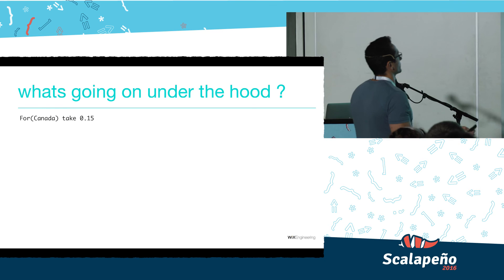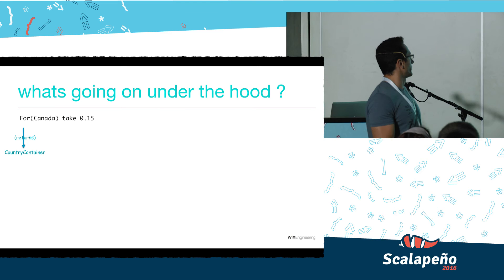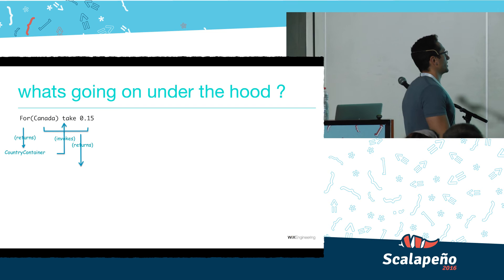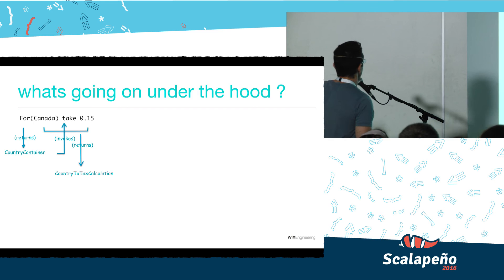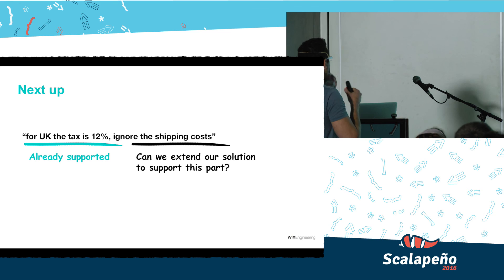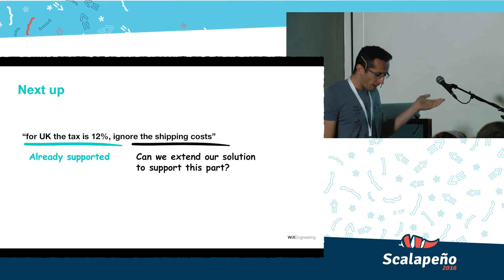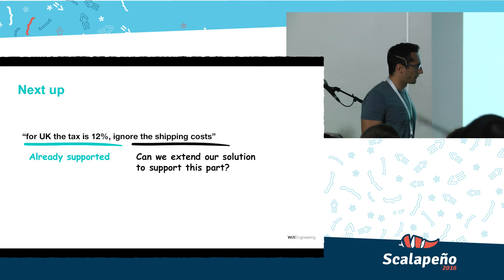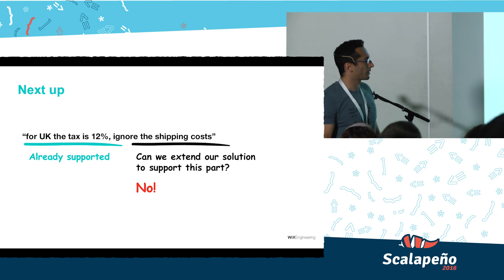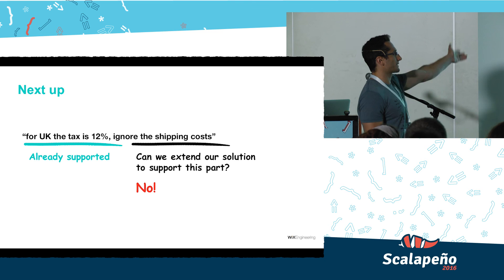Under the hood, the `For` function takes Canada as a parameter, returns a `CountryContainer`, which then invokes the `take` function with the tax amount, and returns a `CountryToTaxCalculation`. For the second requirement — for UK, the tax is 12%, ignore the shipping cost — the first part is already supported, but can we extend our solution to support the second part? Unfortunately no, because by the time we evaluate 'ignore the shipping cost,' we are already left with a decimal — the tax amount itself. So we need to take a step back and add an intermediate step.